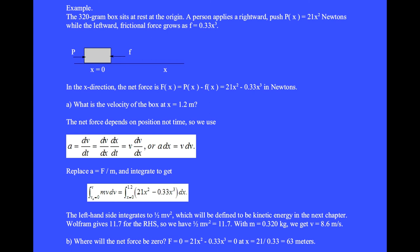This example involves a force that depends on position rather than time. The 320 gram box sits at rest at the origin. A person applies a rightward push, p of x equals 21x squared newtons, while the leftward frictional force grows as 0.33x cubed.